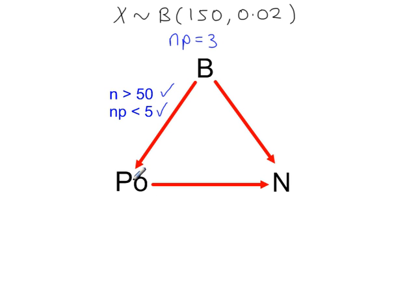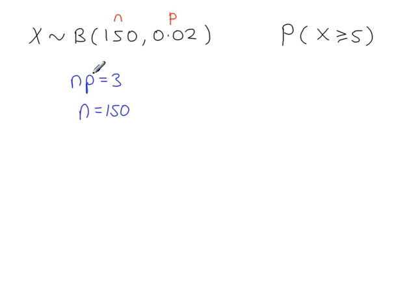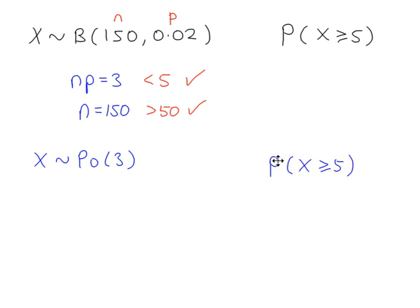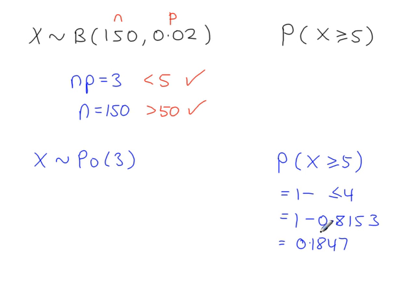In the Poisson distribution, lambda is the mean. So we can use the mean from the binomial for the value of lambda — lambda is equal to 3. NP is less than 5 and n is large (greater than 50), so both conditions are met. We now calculate the same probability using the Poisson probability tables. P(x ≥ 5) equals 1 minus P(x ≤ 4), which is equal to 0.1847.